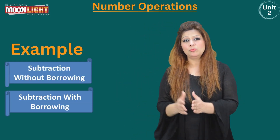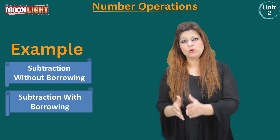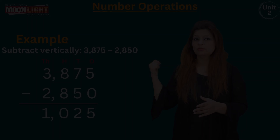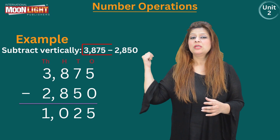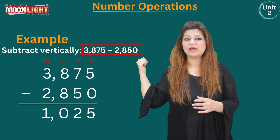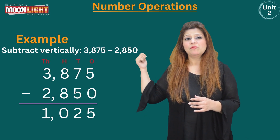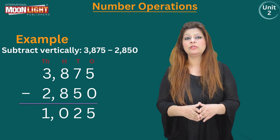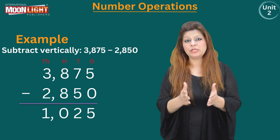Let's start. This is the first example: subtraction without borrowing, solved vertically. The numbers are 3,875 minus 2,850. We are going to write them vertically — first number on top, second number below — and the position of the numbers must be according to the place value chart.